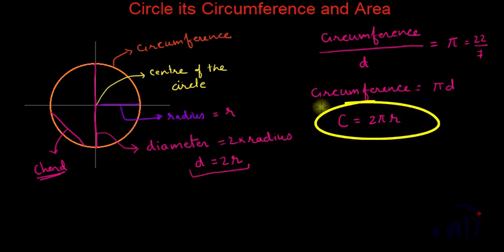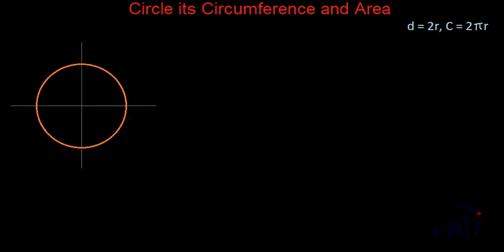This is the formula for the circumference. Now let us talk about the area of the circle. Till now we have learned that the diameter of a circle is 2 times the radius and the circumference of the circle is 2πr. We have also previously learned about the area of a rectangle, square, parallelogram, and other geometric shapes.